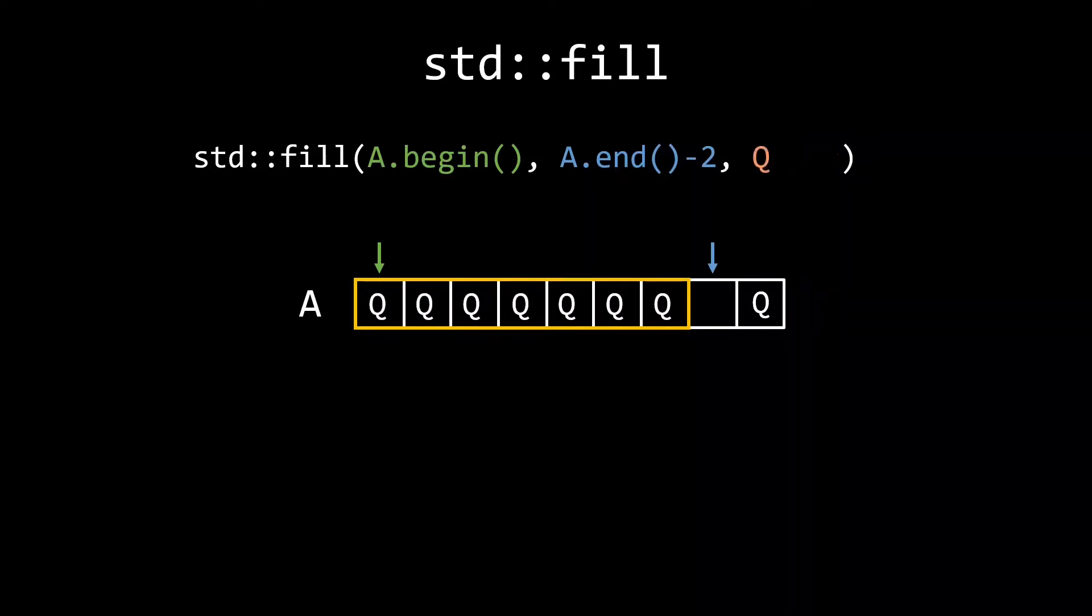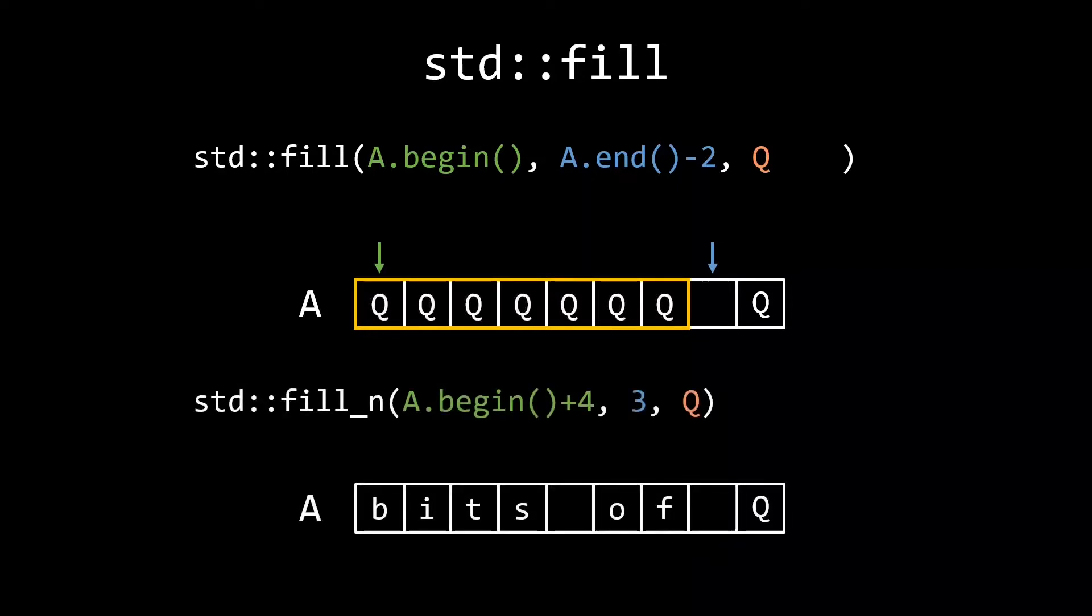Simple and great for initializing or resetting the content of containers at the start of a computation. Just like the copy algorithm, which we talked about a few episodes ago, fill also has a fill_n variation, which takes an iterator indicating the start of the range and the length. Other than the different way of specifying the range on which fill_n should operate, it works exactly the same as the normal fill algorithm.